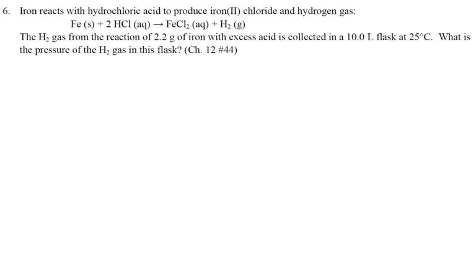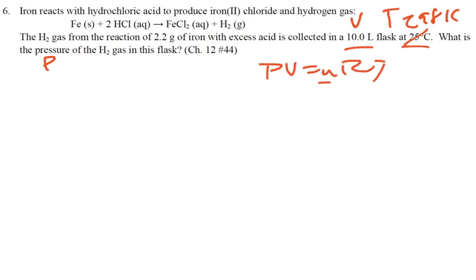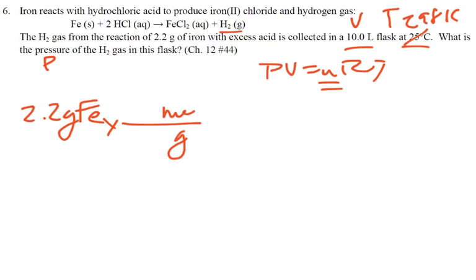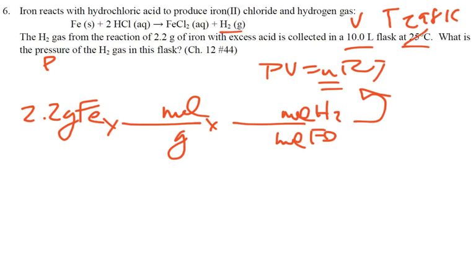Number 6. Iron reacts with hydrochloric acid to produce iron chloride and hydrogen gas. The hydrogen from the reaction of 2.2 grams of iron is collected in a 10-liter flask. What's the pressure at 25°C? Convert 25°C to Kelvin. We have a volume and a temperature, so if we know moles of hydrogen gas, we can do PV = nRT. Go from 2.2 grams of iron to moles using molar mass, then moles of iron to moles of hydrogen via the balanced equation, then plug into PV = nRT to calculate pressure.